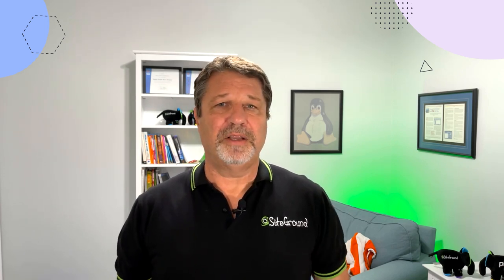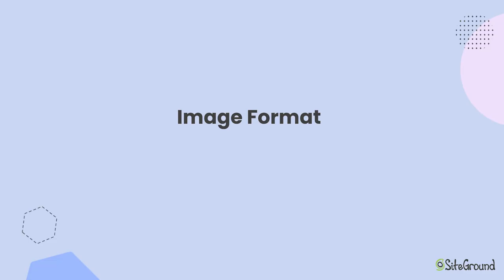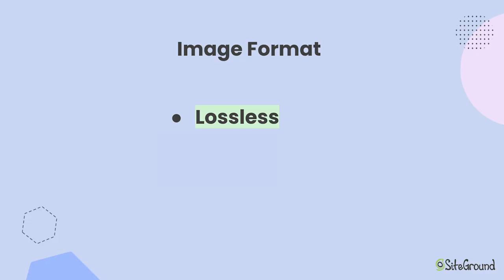There are two aspects of an image that we need to consider in order to optimize it: the format and the size. The first thing we're going to talk about is the format of your images and how they're saved, because this alone can make a significant difference. Image formats fall into two categories: lossless and lossy.